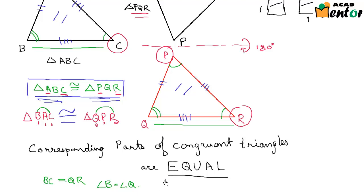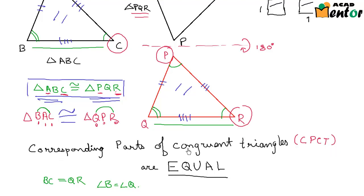That's right, because corresponding parts of congruent triangles are equal. In short, we also call these CPCT — this is short for corresponding parts of congruent triangles, and we know that they are equal.